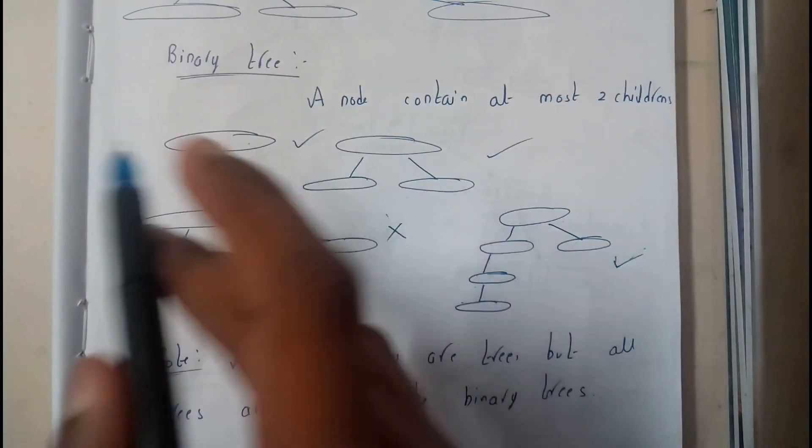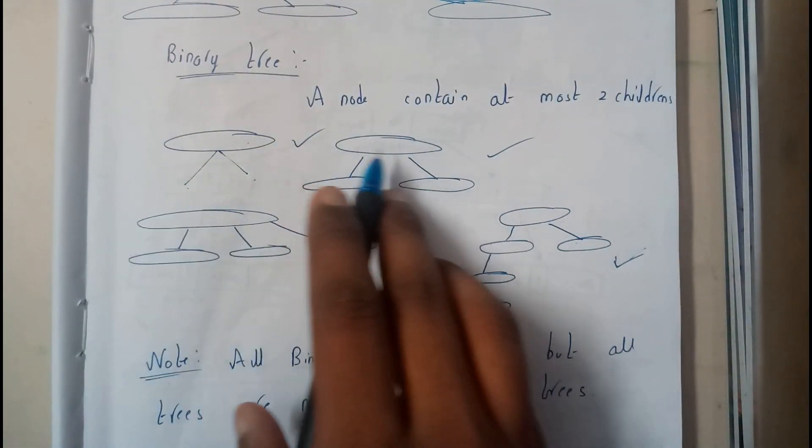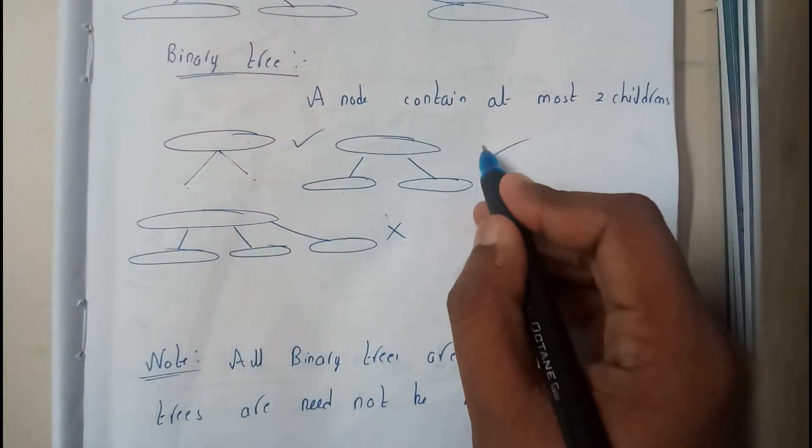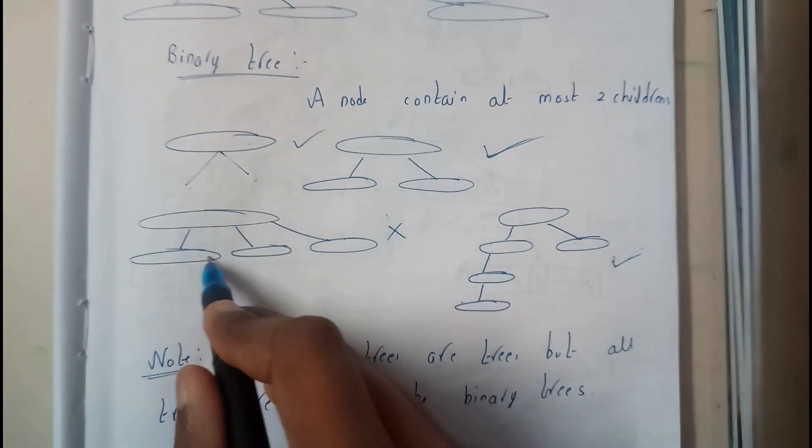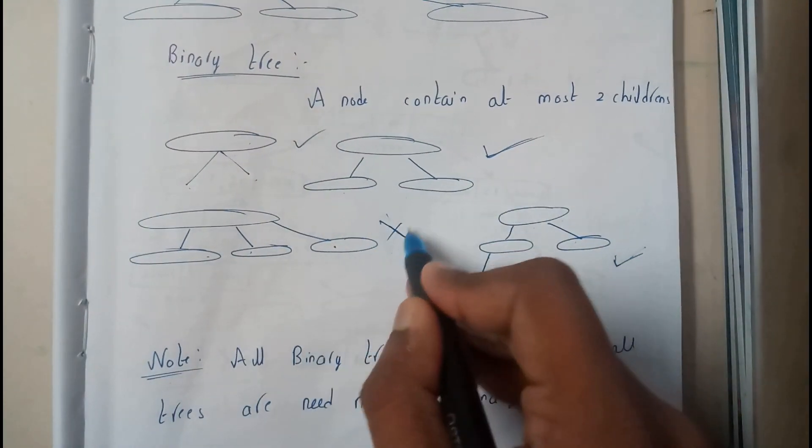Similarly, here we got exactly two children. Hence this is a binary tree. Whereas here we are having three children. This is not going to be a binary tree.